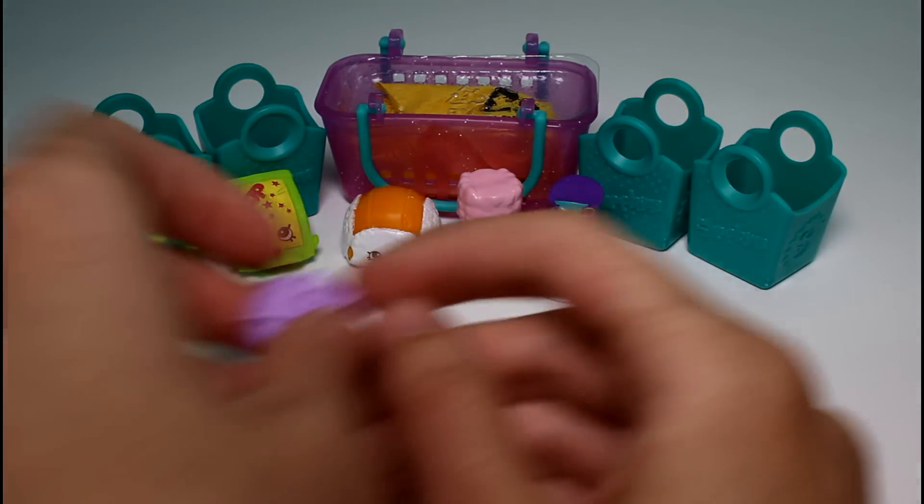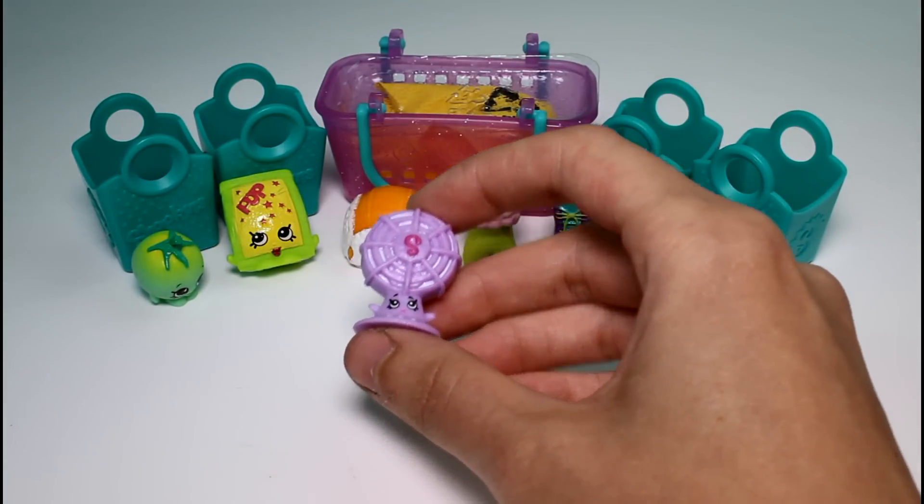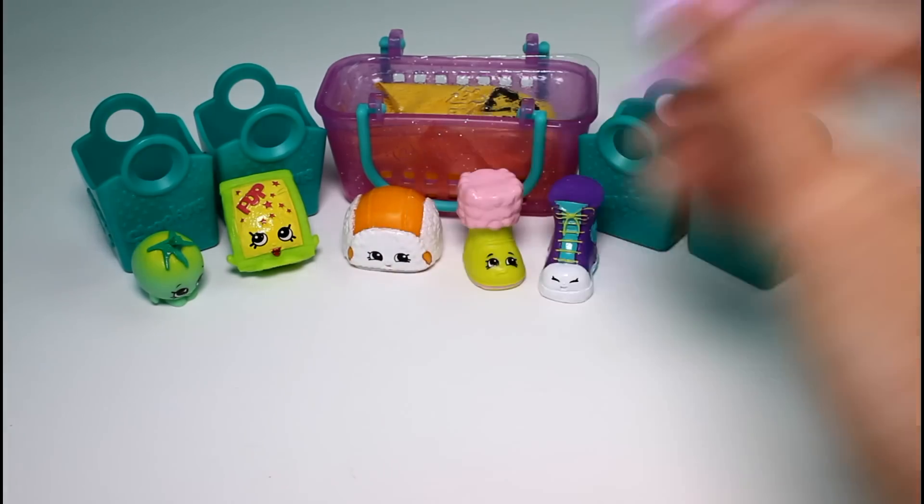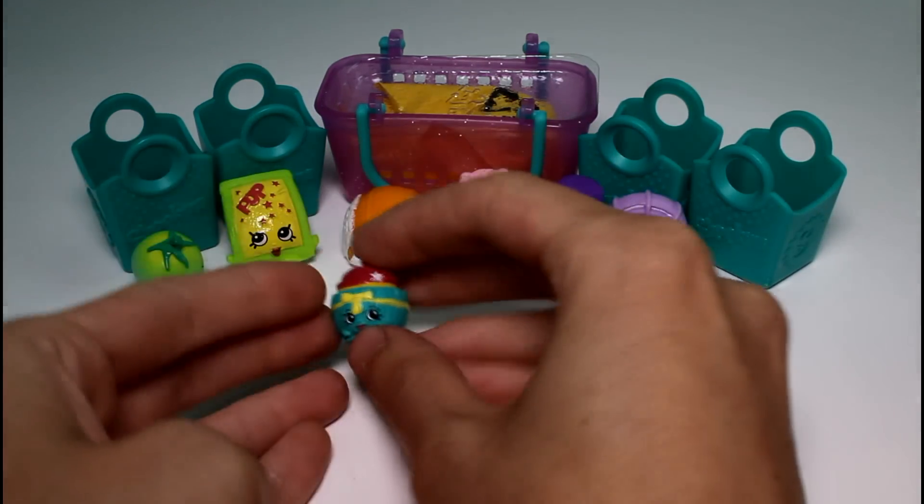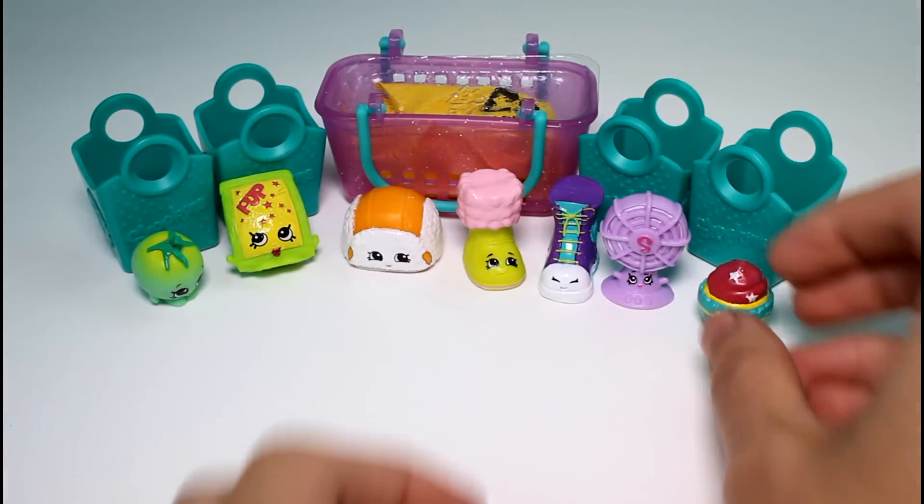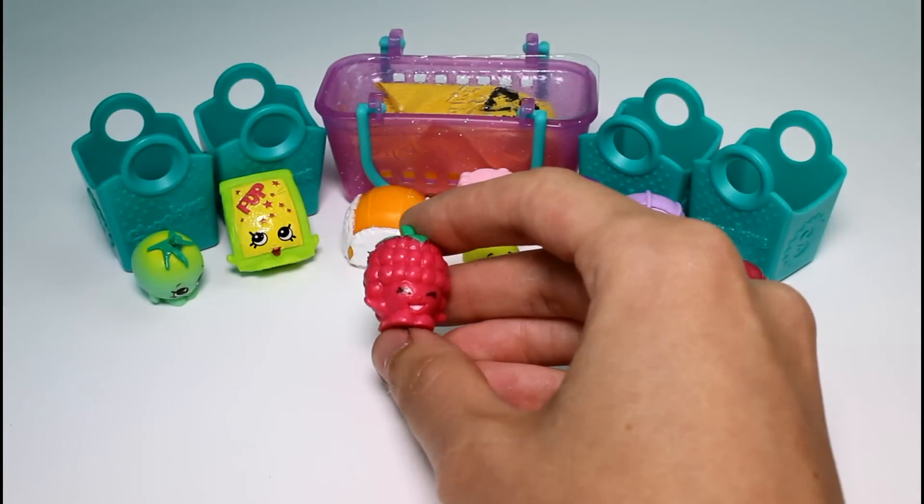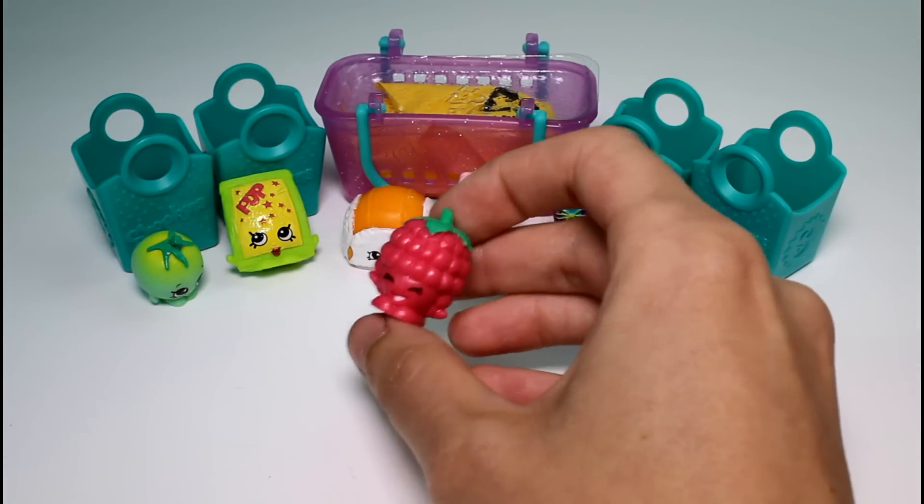And then we have Blow Ann. And I think Blow Ann's a common. I think so. Yeah, she is. And then we have Patty Cake. Patty Cake is so cute. She's common. And then we have Asbury Raspberry, and she is a common.